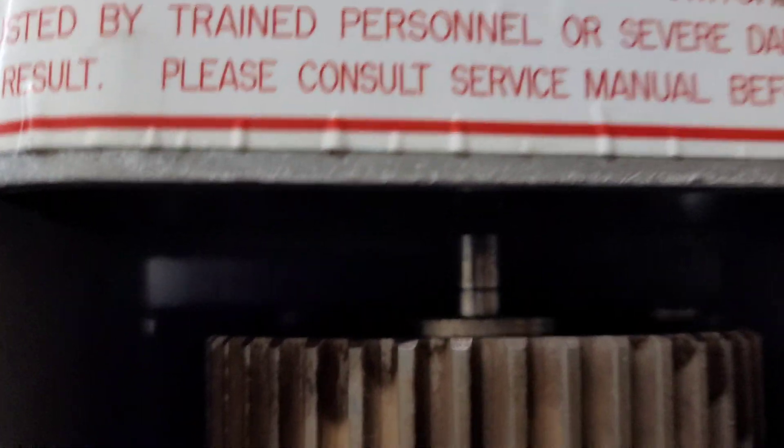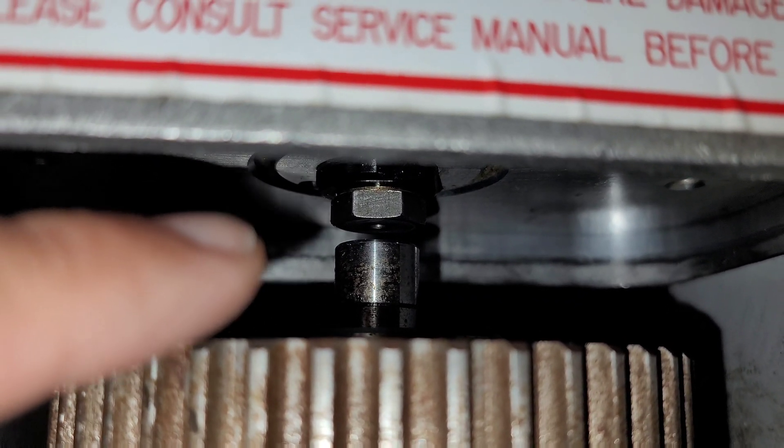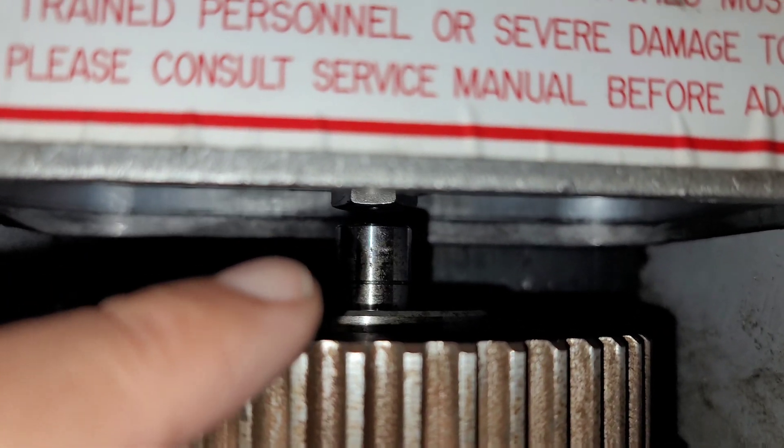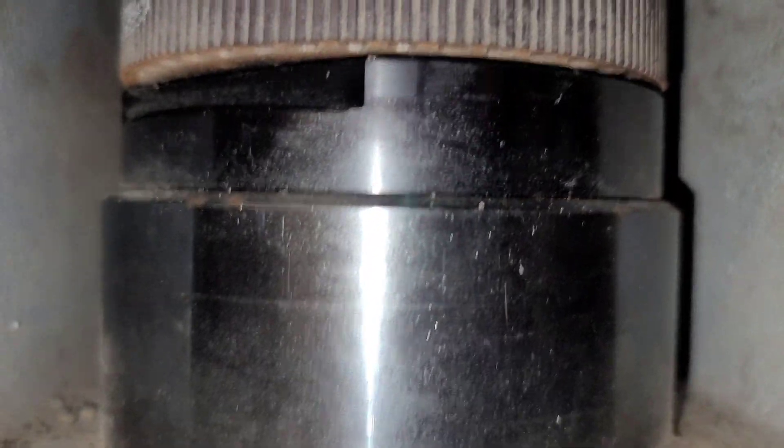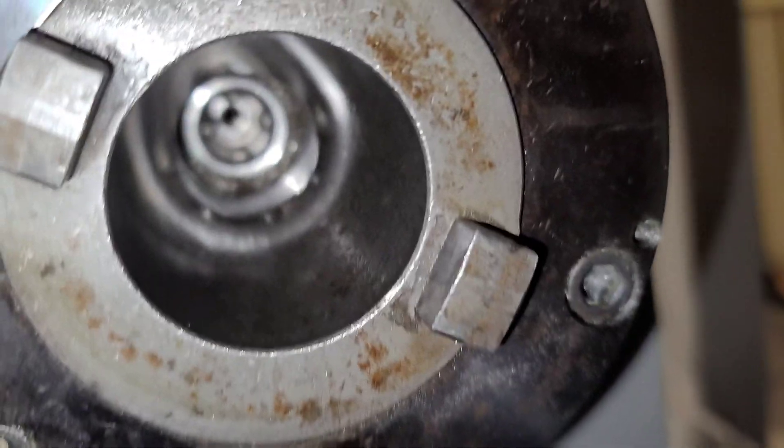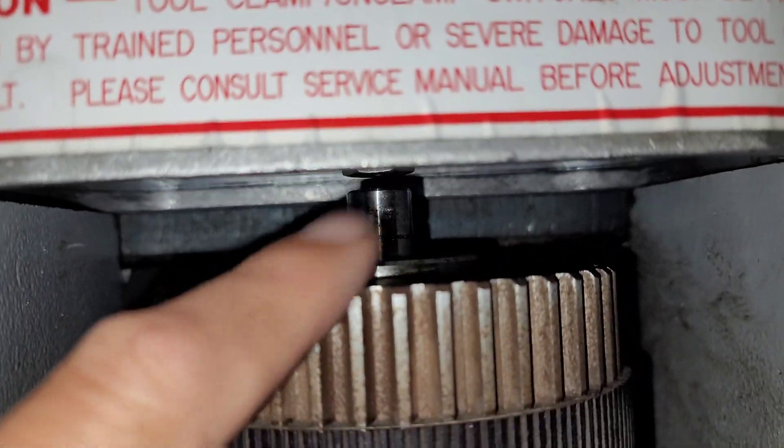So we also found some of that black gunk clogging the space between the tool release piston and the draw bar, and so we cleaned that out because there was not a lot of air coming through the draw bar and coming out of the spindle here. But I'm wondering if there's also a clog further down.